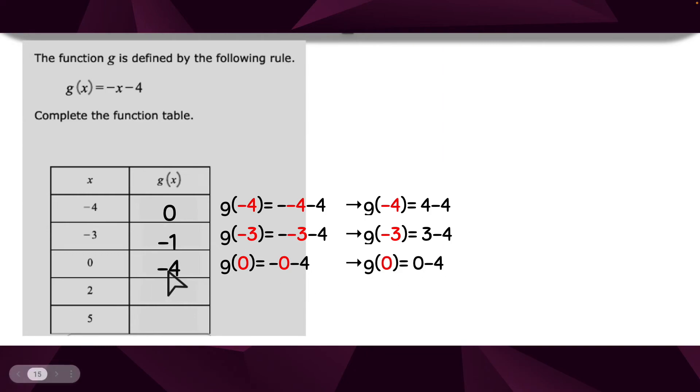Then I get 2. So negative 2 minus 4. I'm just going to keep it the same because there's nothing that changes. Negative 2 minus 4 is negative 6. Same thing with negative 5. Negative 5 minus 4 is negative 9. So we're just plugging in the numbers they're giving us and seeing what we get out. Here's our input, here's our output. That's all they're asking us to do on these function tables.